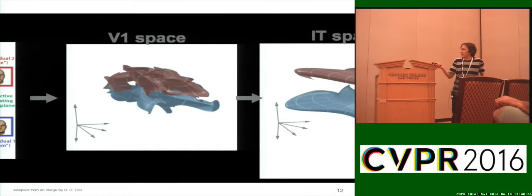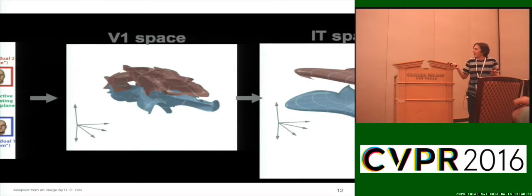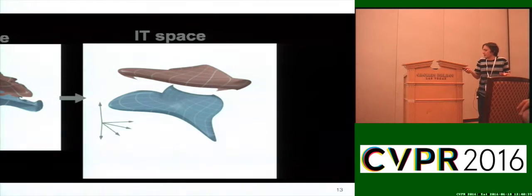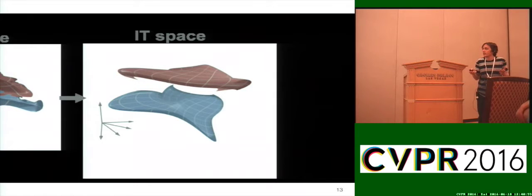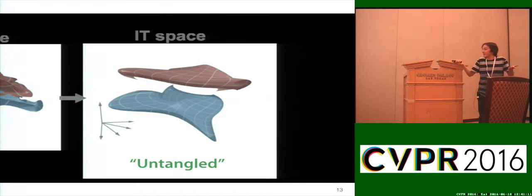We can think of deep learning representations as something like IT-space in the brain — higher-level representations actually used when making a decision. This makes the classification problem easy because you can throw a linear SVM or a simple classifier on top, since the features are so well separated in space. You get great untangled representation.